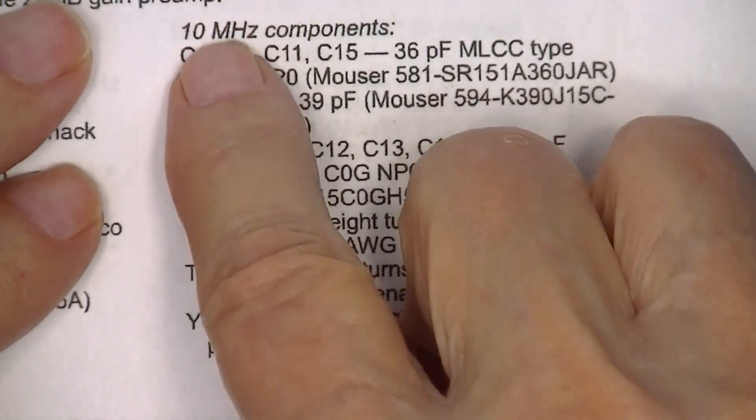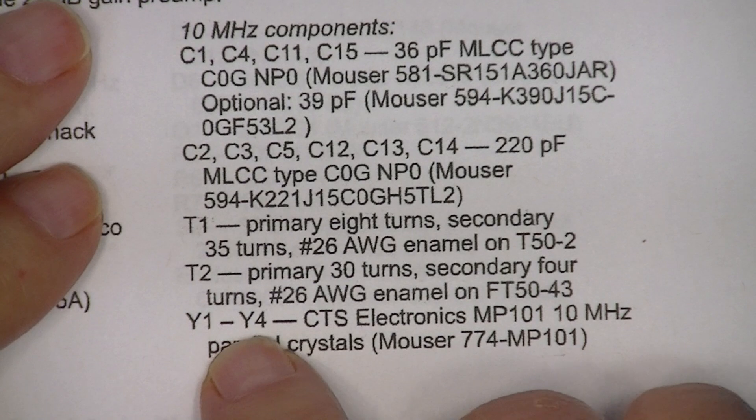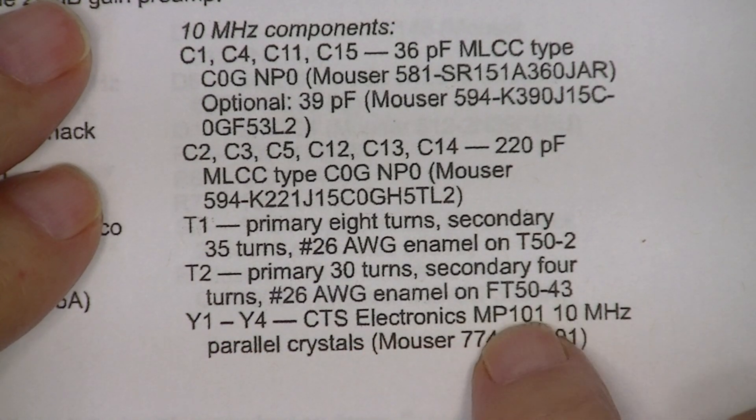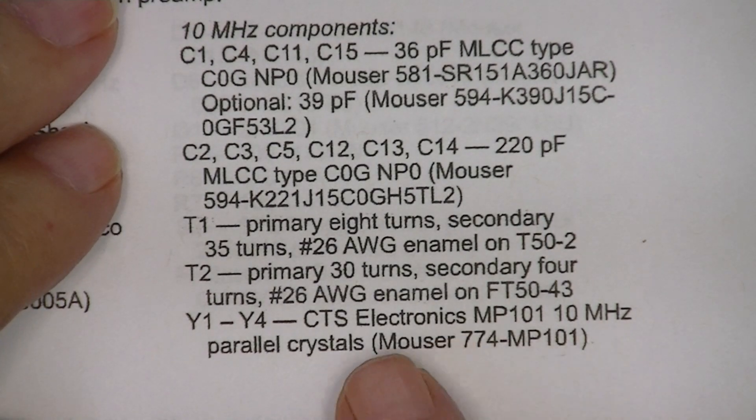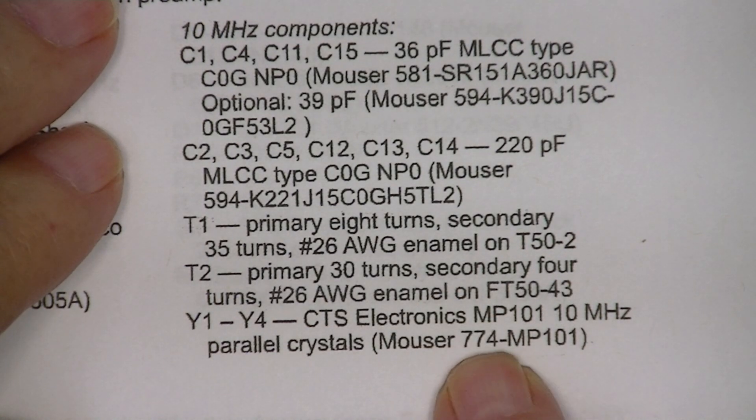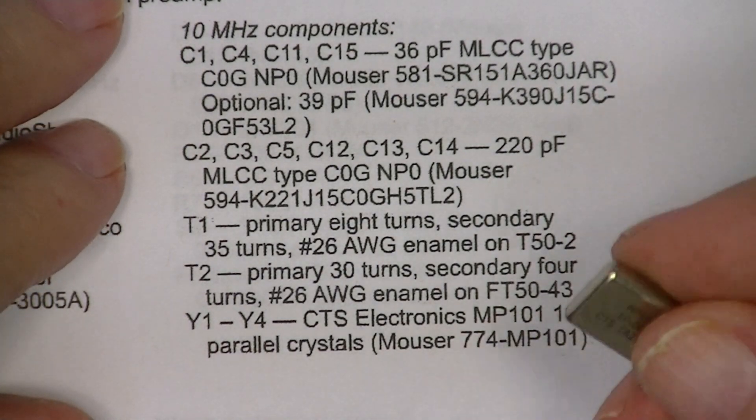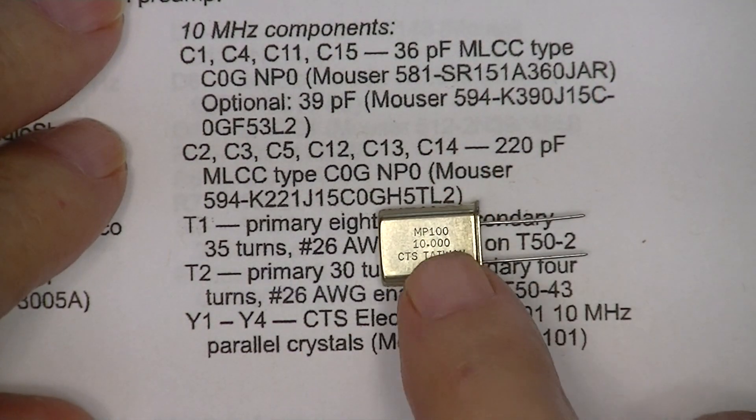For the 10 megahertz configuration, Y1 through Y4 are CTS MP101 10 megahertz parallel crystals. Here's the Mouser part number, and you can see it's an MP101. The crystals I used—and I didn't know this because I didn't look at them—were actually CTS MP100s.